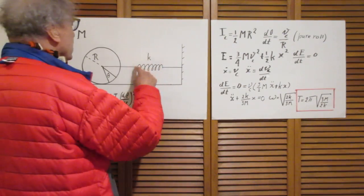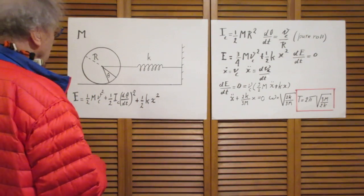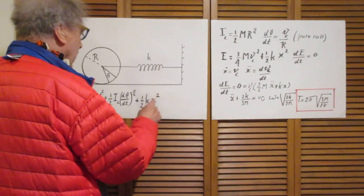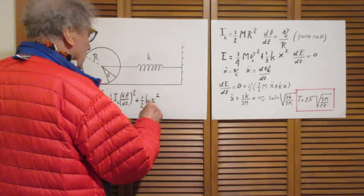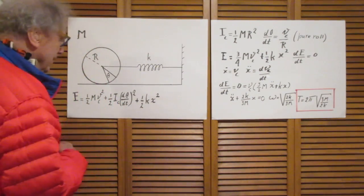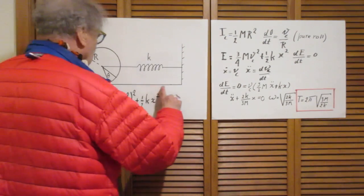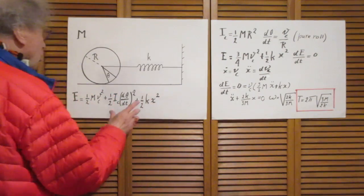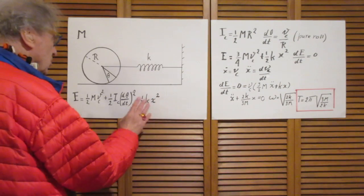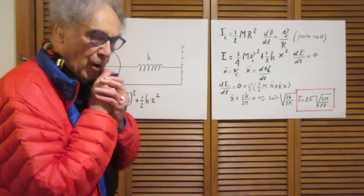And then the potential energy of the spring is 1 half kx squared. Whether x is positive or negative is always 1 half kx squared, because the square of a negative number is the same as the square of the same positive number. So this is the total energy. Look at this. Make sure that you completely digest this. If you miss this, it's all over.